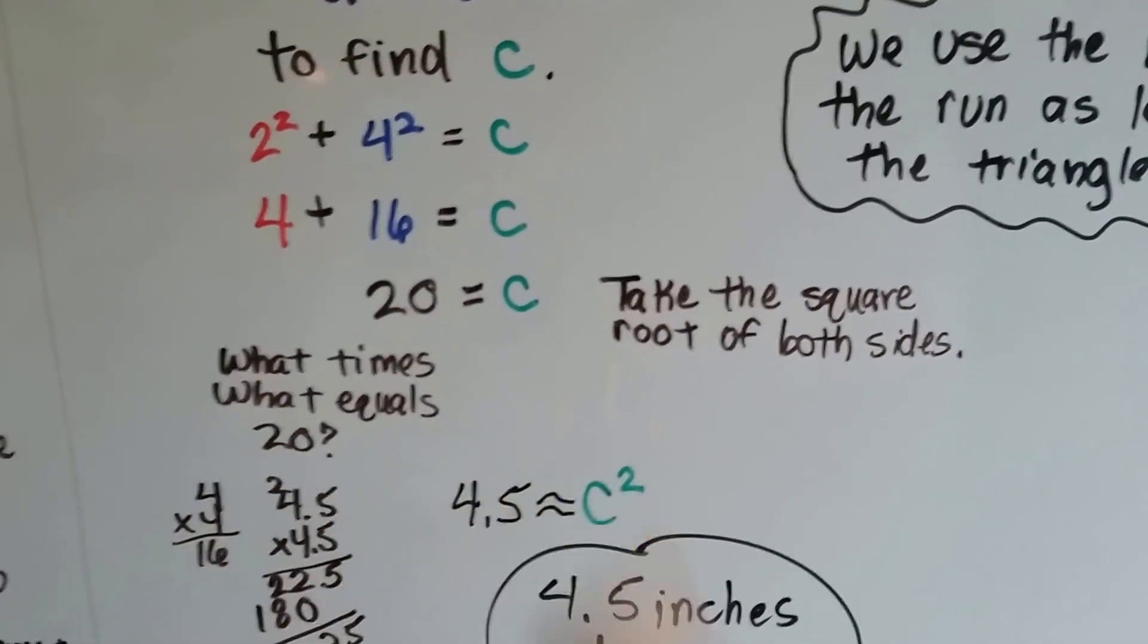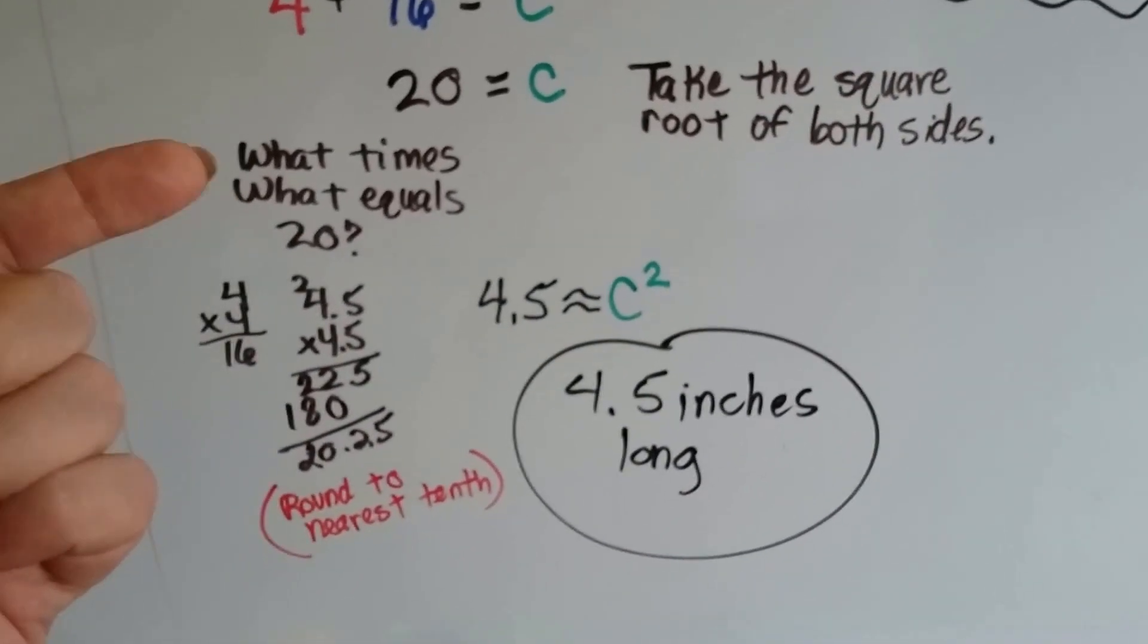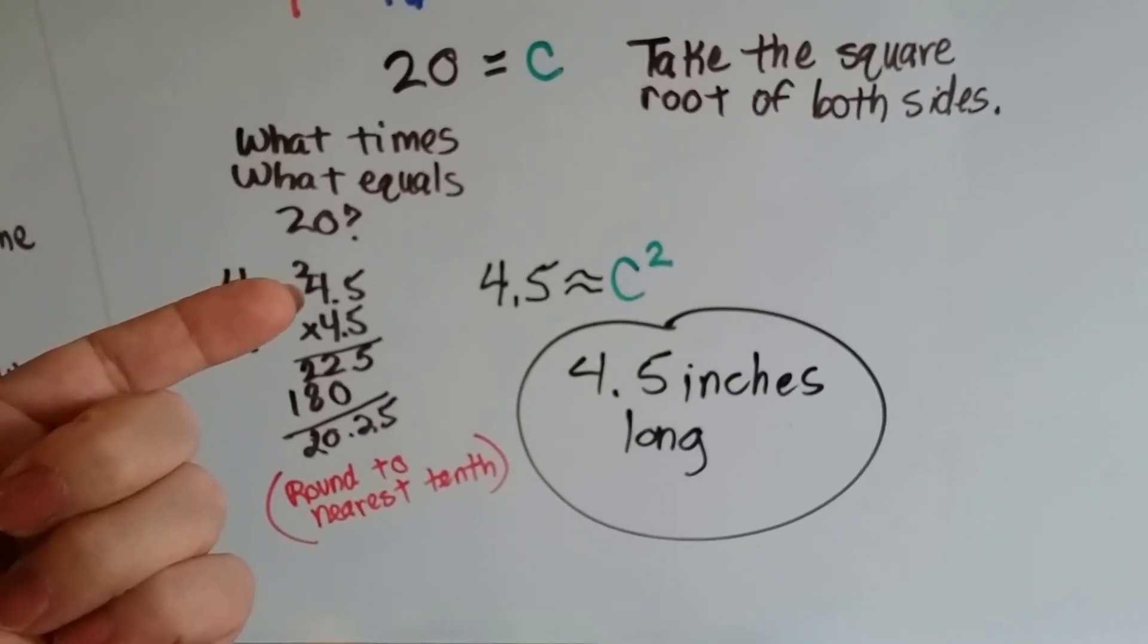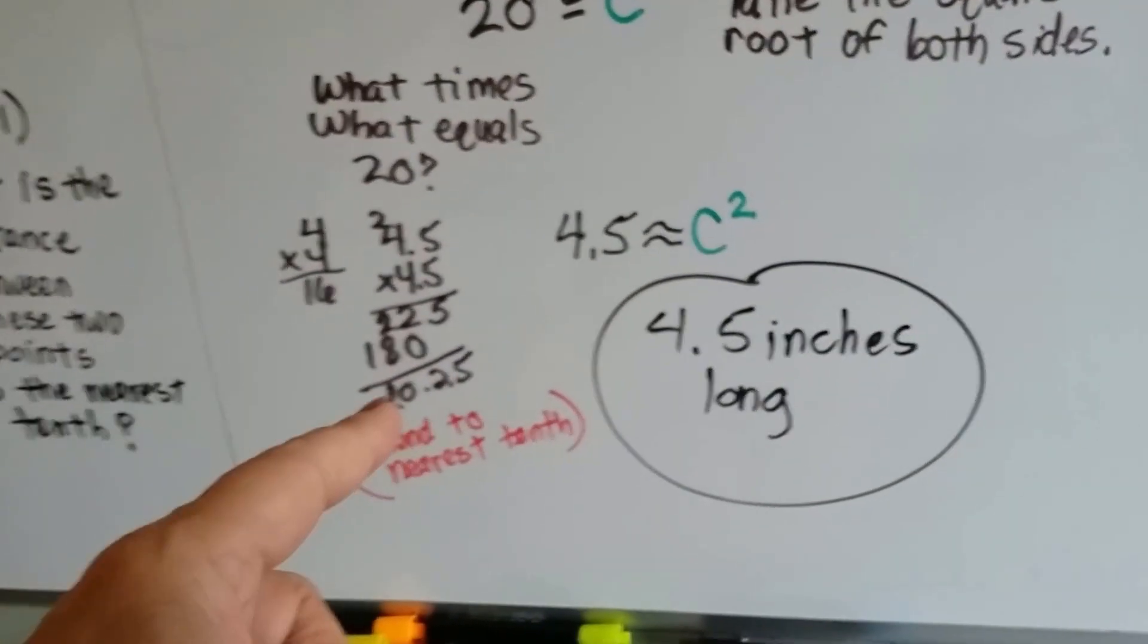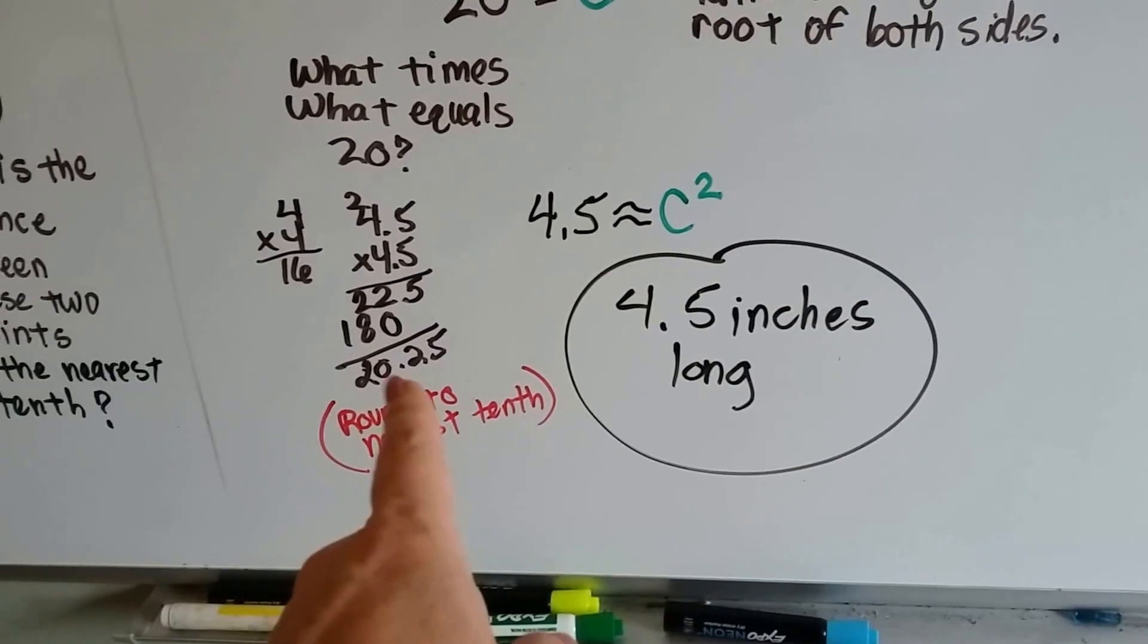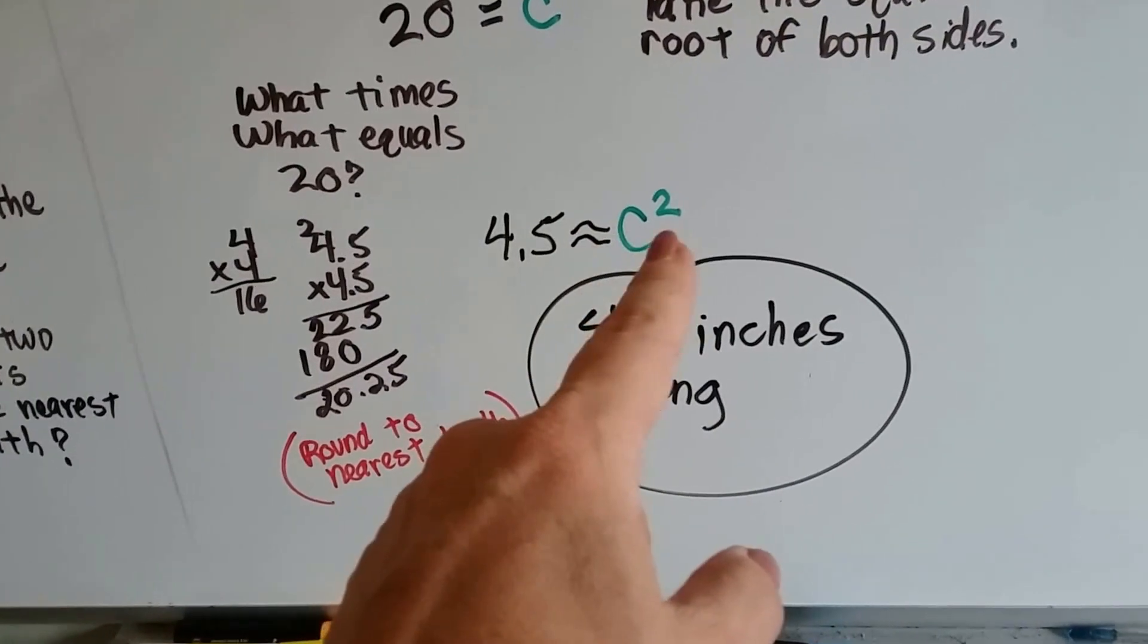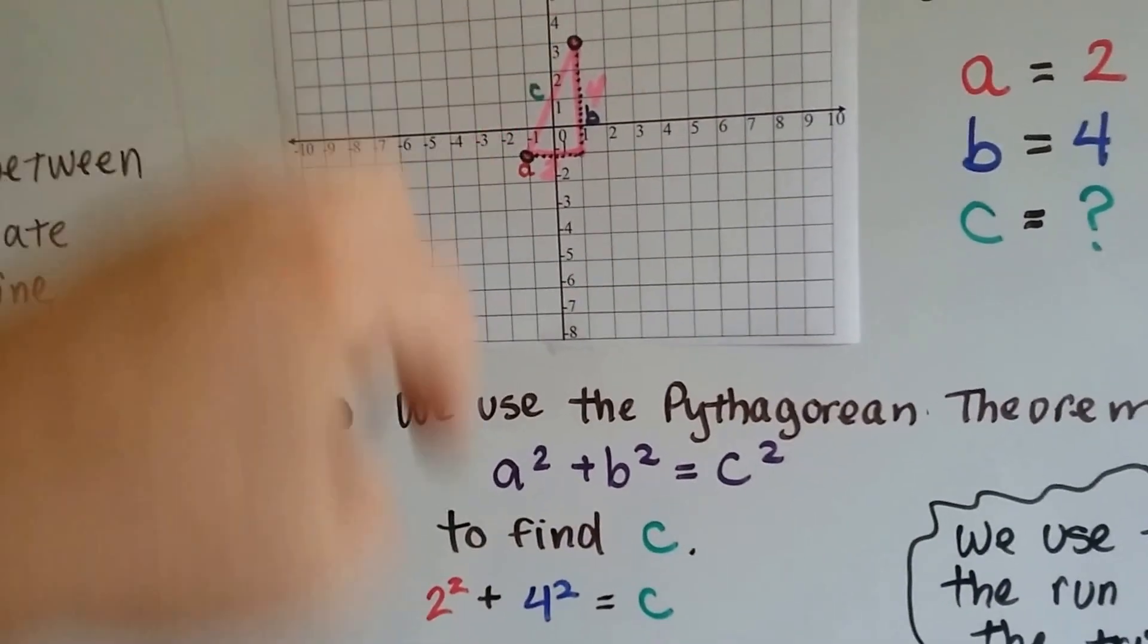So 20 is c and we need to take the square root of both sides. So we have to figure out what times what equals 20. Well, I know 4 times 4 is 16, but that's too small. I tried 4.5 times 4.5 and I got 20.25. And that's pretty close to the nearest tenth, 20.2, right? Because to the nearest tenth would take off that 5, wouldn't it? Because 2 is in the tenths place. So that means approximately 4.5 would be c. Approximately 4.5 is c. That's its length, 4 and a half inches.